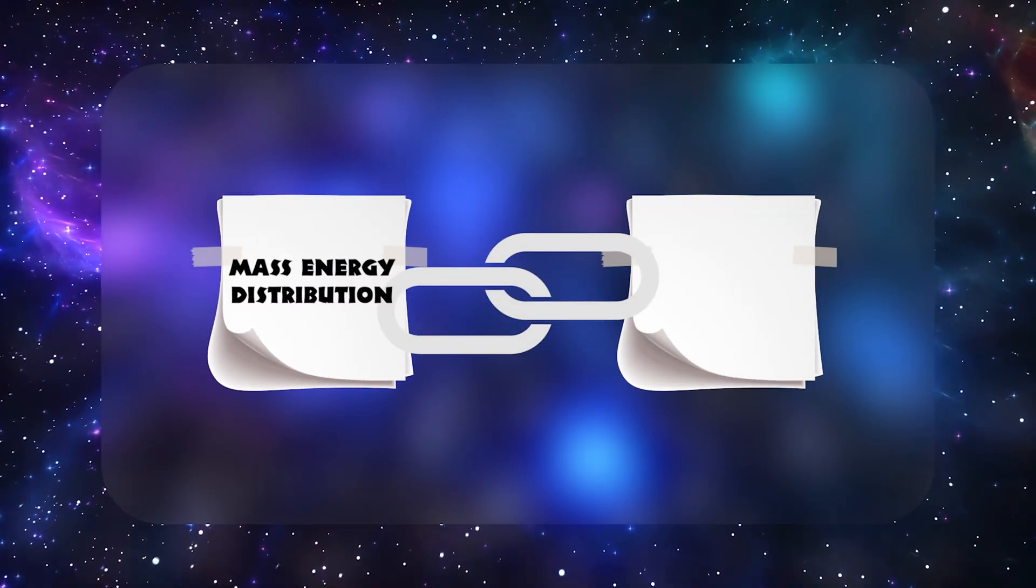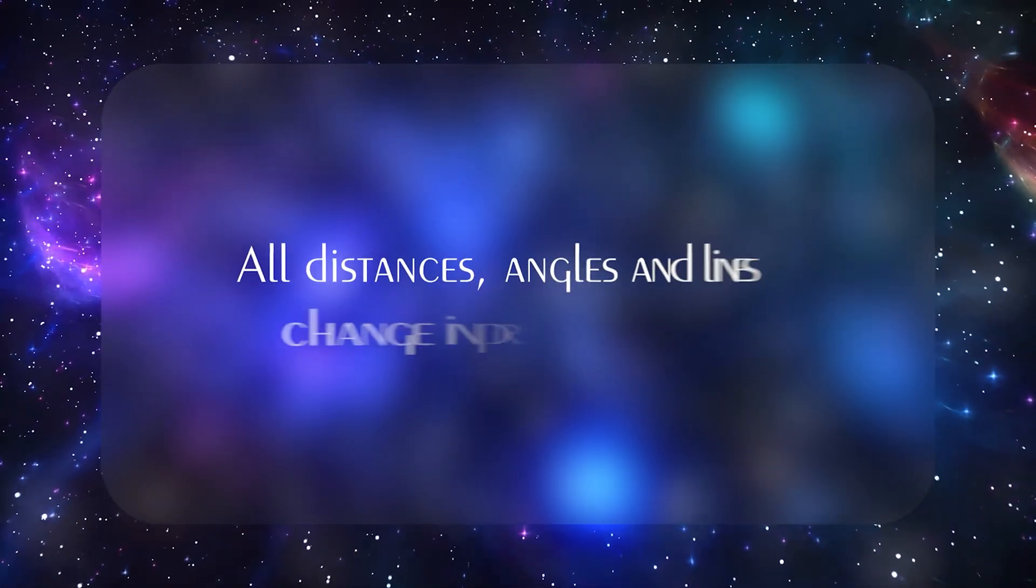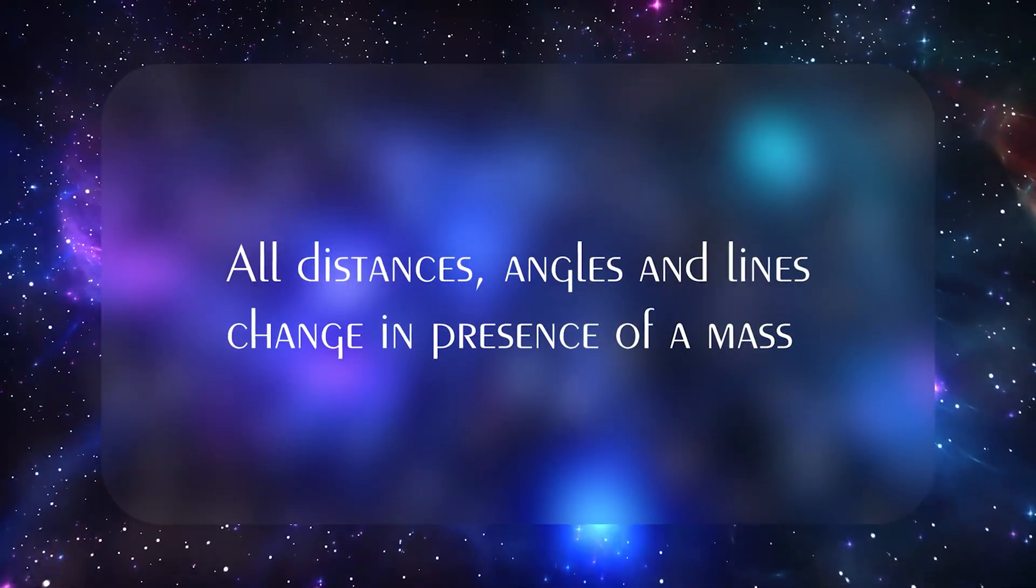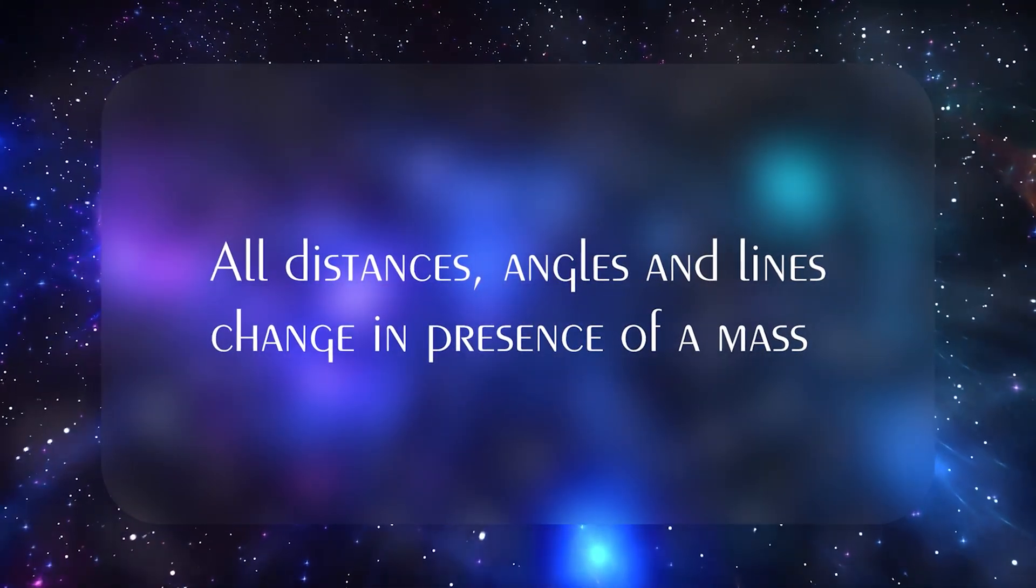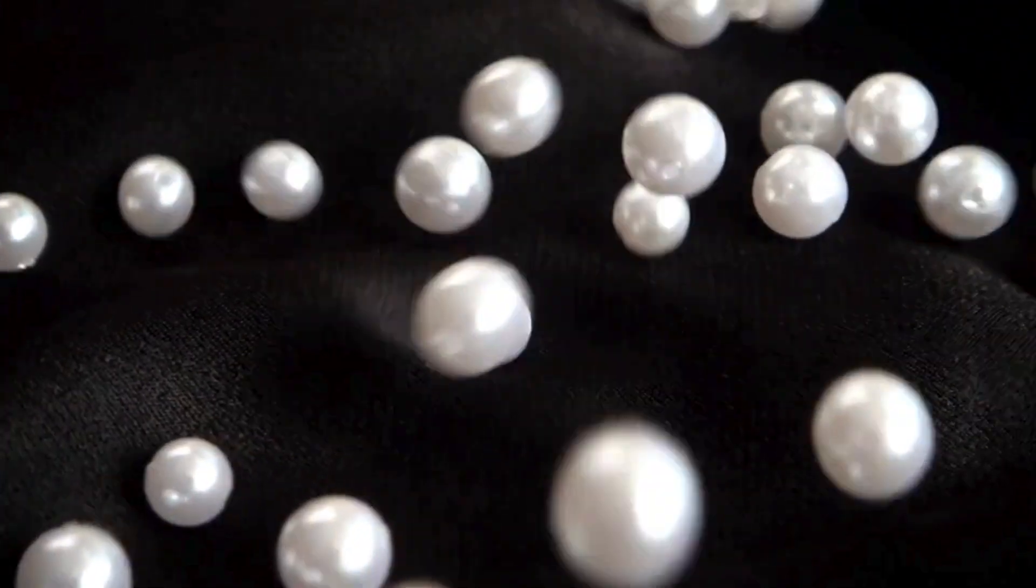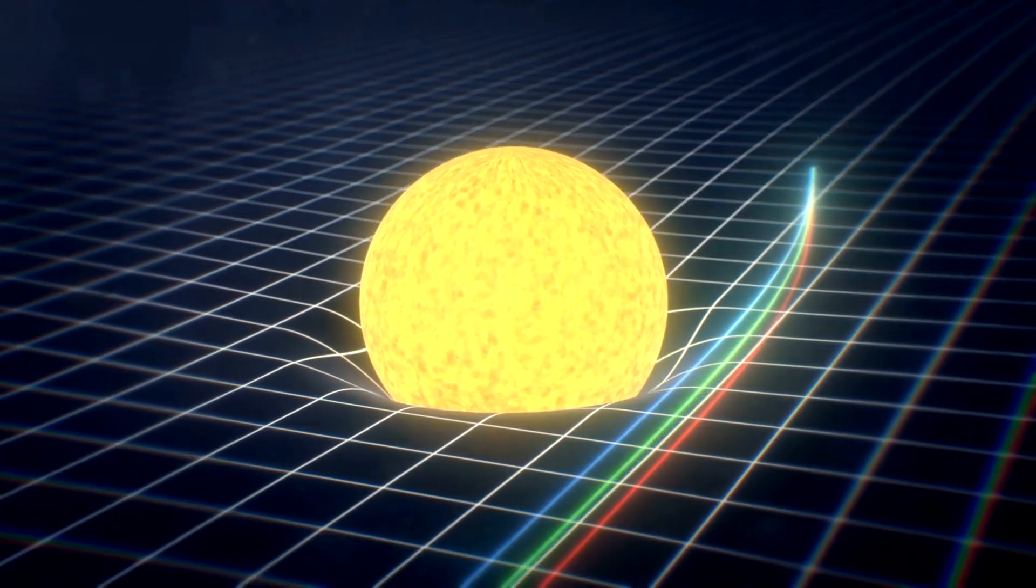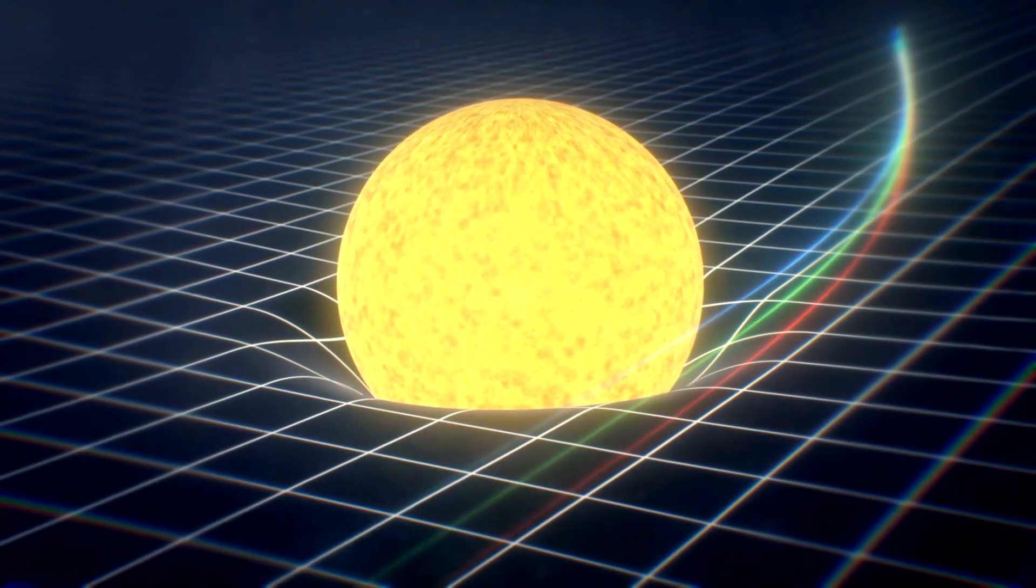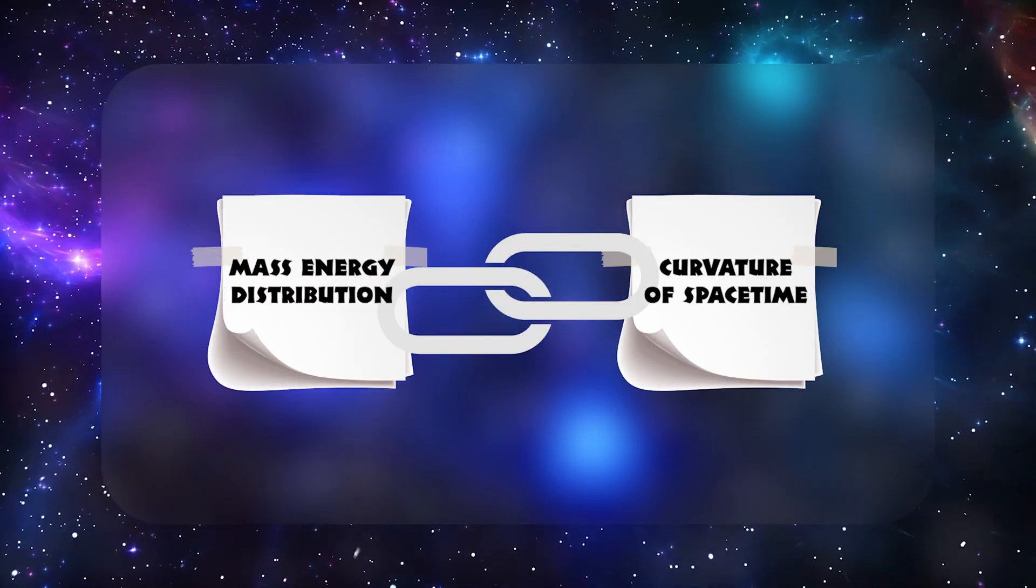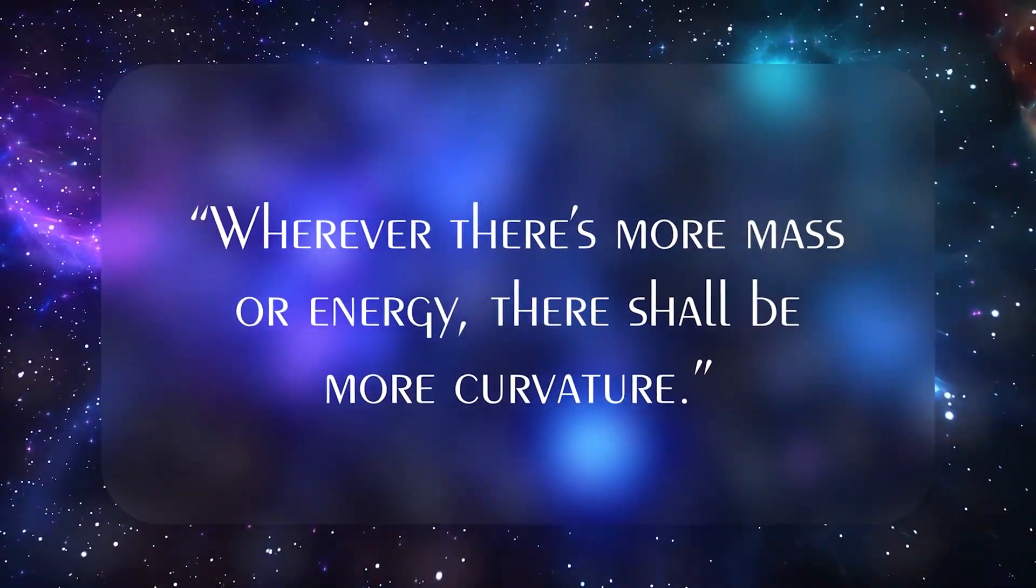The second is that the curvature of spacetime is essentially the idea that the very geometry, all the distances, angles, and straight lines in spacetime, changes in the presence of mass or energy. Imagine spacetime as a flexible fabric. If a massive object sits on it, the shape of that fabric around the object bends inward. Things passing by, like planets or light beams, then move as though they're traveling on a sloped or dented surface. When you put them side by side, you get something that says wherever there's more mass or energy, there shall be more curvature.